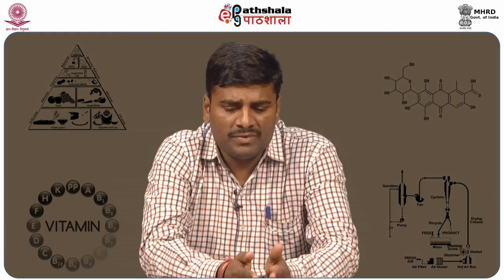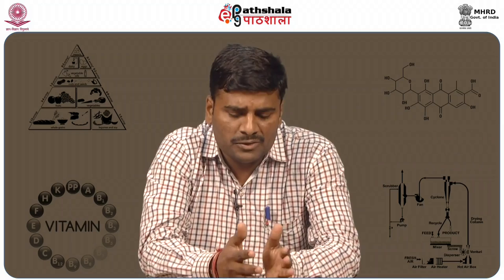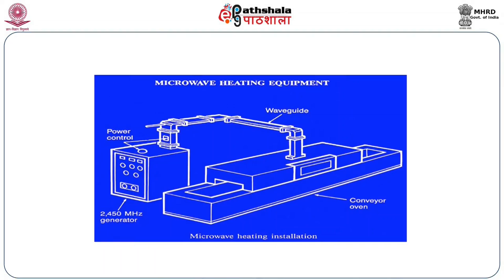The microwave heating we see at home is a simple box where you keep the food, but that same setup is not applicable for large-scale food industry. For large-scale use you need a bigger setup - the microwave heating equipment shown here. From the magnetron generator, frequency waves of 2450 megahertz are produced and passed through a waveguide, then fixed to a belt or chain conveyor where the product passes from one section to another.